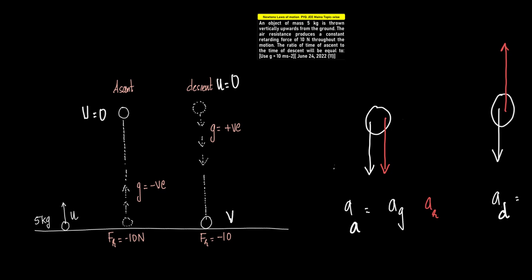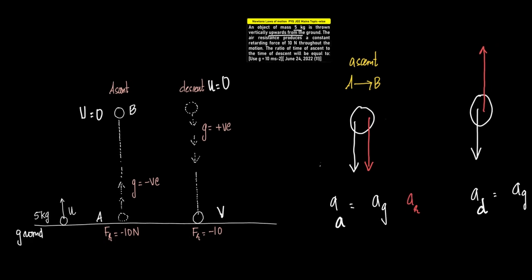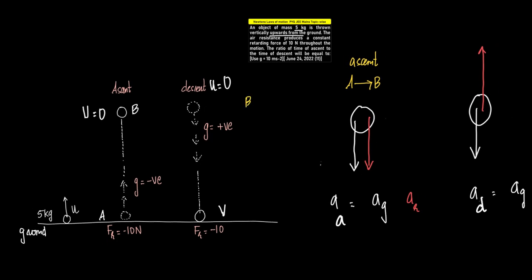If we visualize the given data: this is the ground, the object is thrown from A and reaches B. From A to B is the ascent, and during descent we have the motion from B to A.